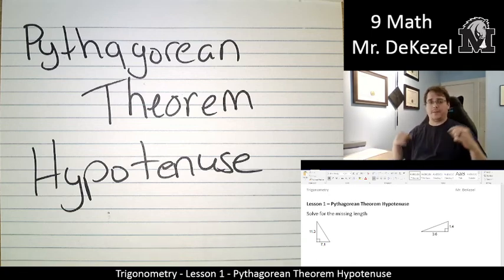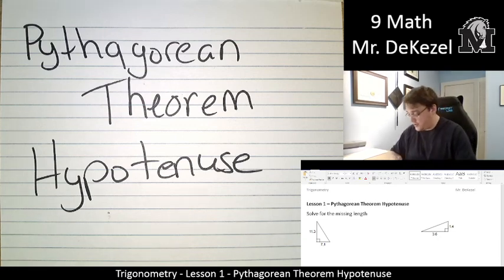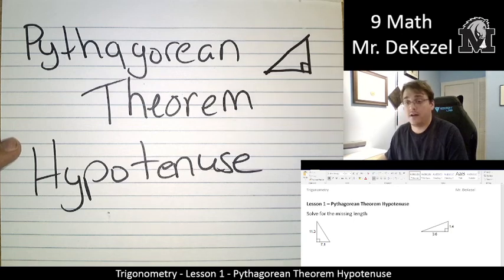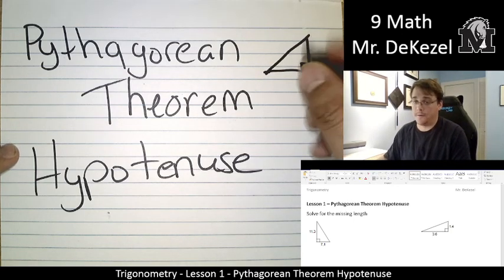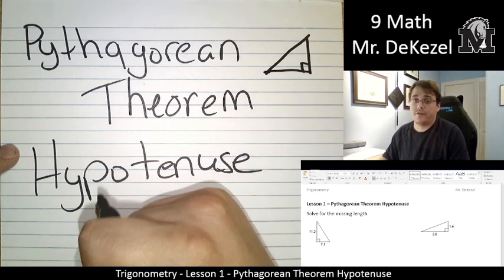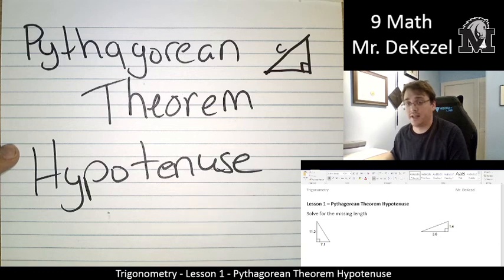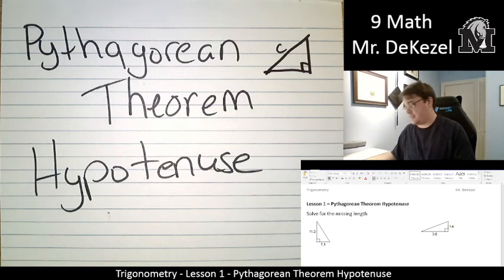We are going to be using the Pythagorean theorem to find the hypotenuse. The hypotenuse is the longest side of a right-angled triangle. It is the side across from the right angle. So this right here is our hypotenuse, and it is often denoted in these problems as C.